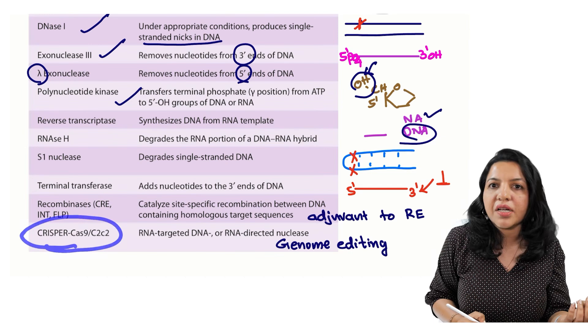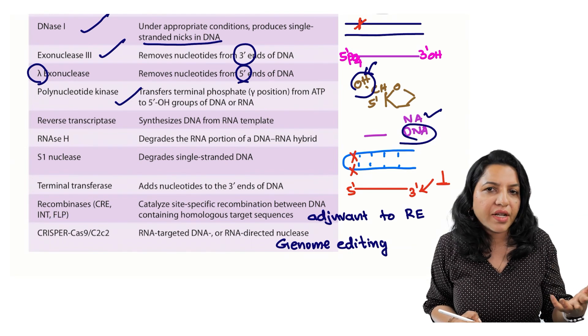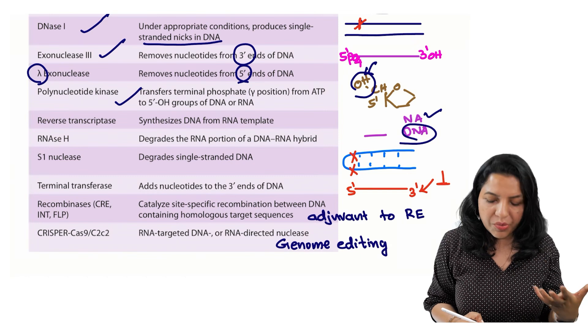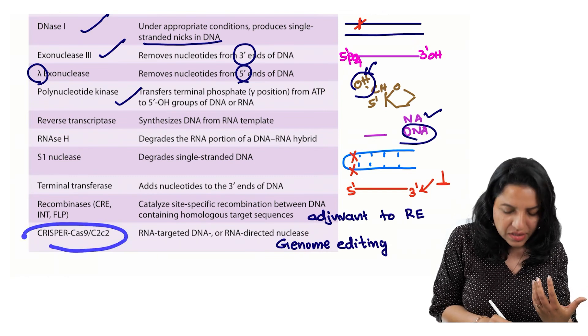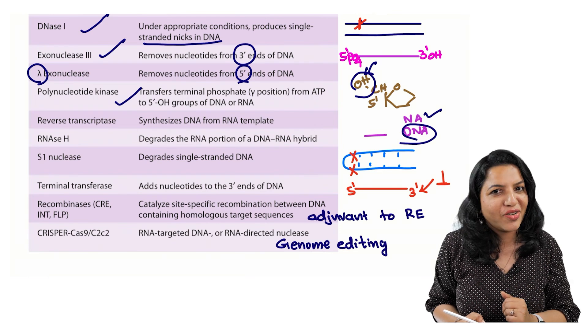Then the last one is the CRISPR-Cas9 system which is a genome editing mechanism which is an enzyme used in the recombinant DNA technology. This is the latest one added to this list. These are the enzymes used in the recombinant DNA technology.